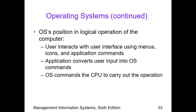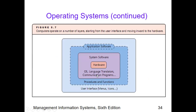The user interacts with the user interface using menus, icons, and application commands. From user to application, input from the user is converted into OS commands, and the commands go to the CPU to carry out the operation. Computers operate on a number of layers, starting from the user interface and moving inward to the hardware. The user interface sends procedures and functions to the application software, and then the system software acts as a mediator to connect with the hardware.